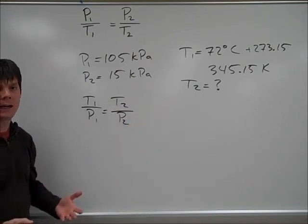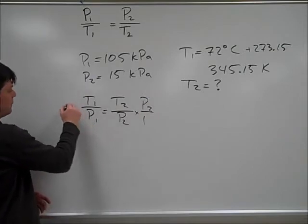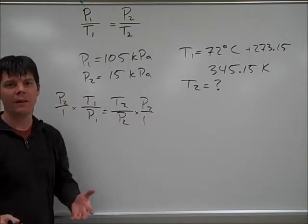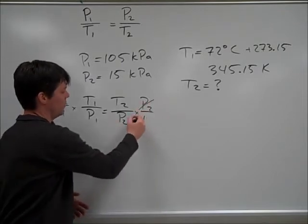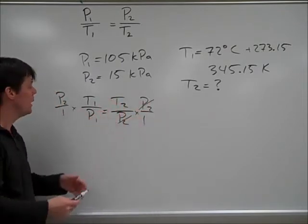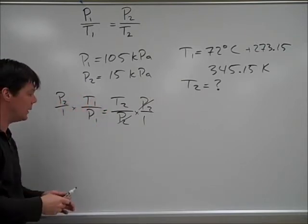We can then multiply each side of the equation by P2. And this will allow us to solve for T2. So, we can solve and see that T2 is equal to P2 times T1 divided by P1.